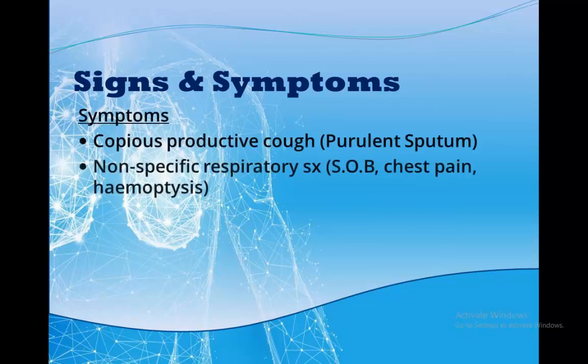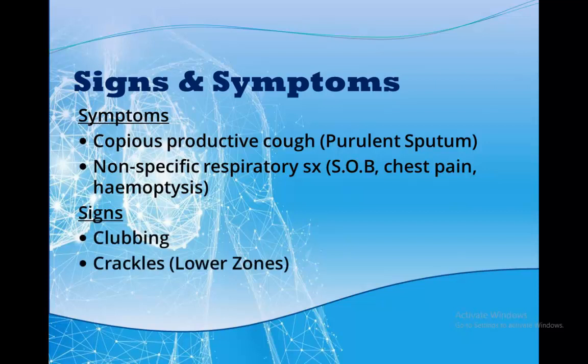Patients present with coughing up of a copious amount of purulent sputum and non-specific respiratory symptoms like shortness of breath, chest pain and haemoptysis. Signs include clubbing — due to the chronic nature of the disease — and on auscultation you'll hear crackles mostly in the lower zones, crepitations, and wheeze because of the obstruction.